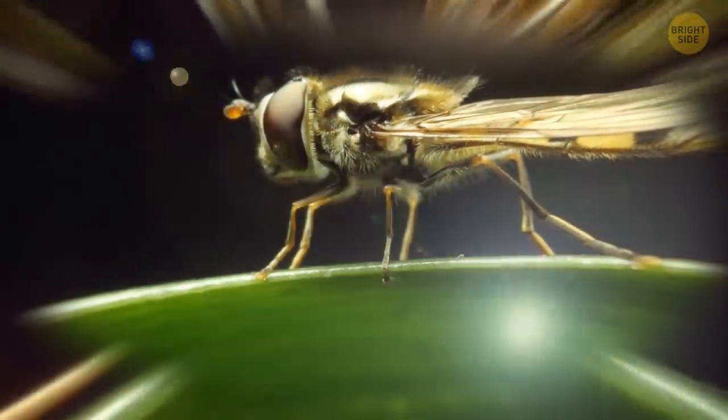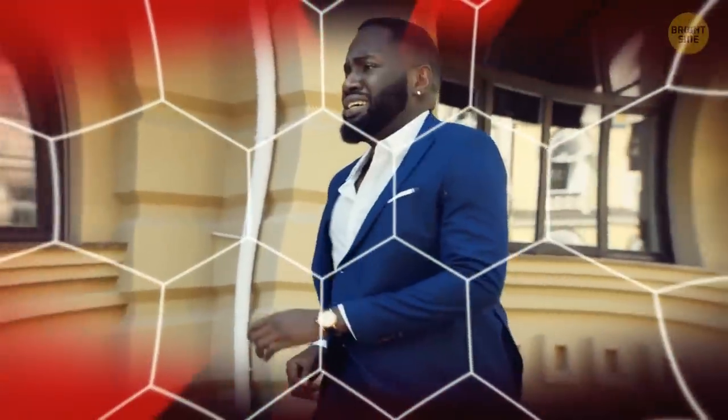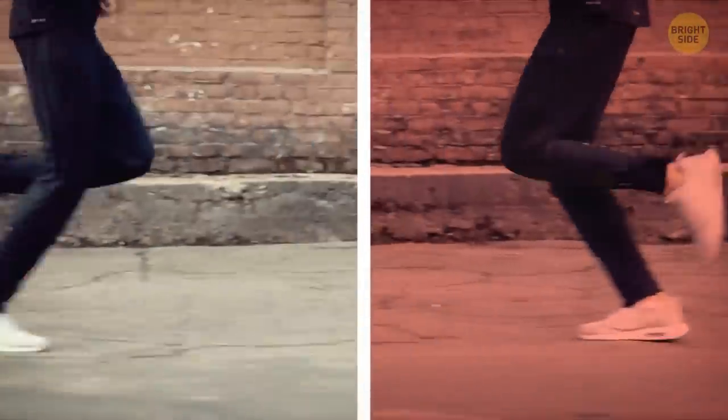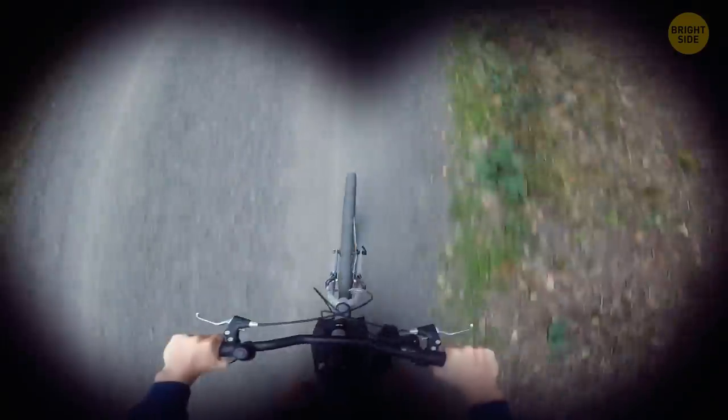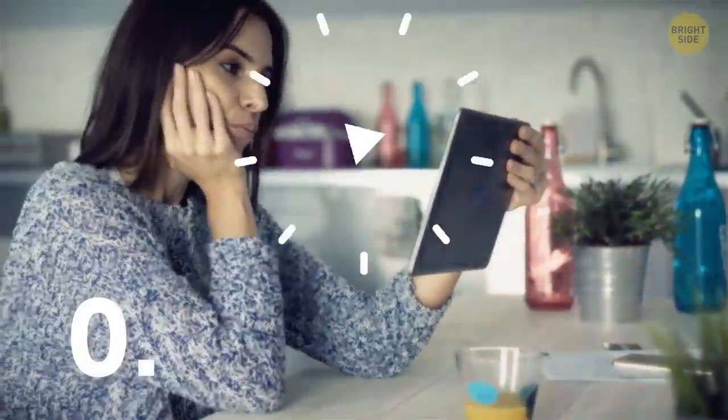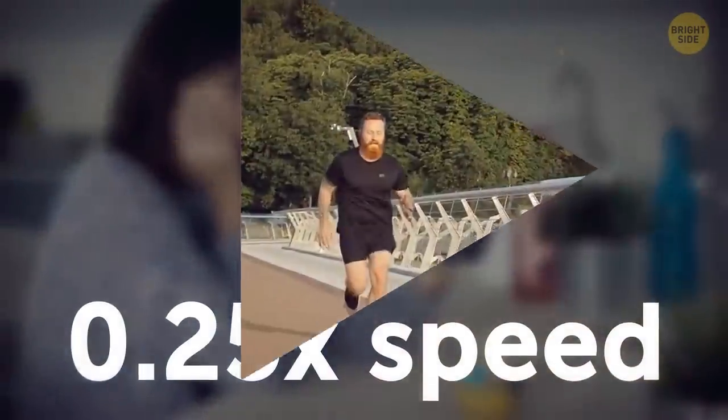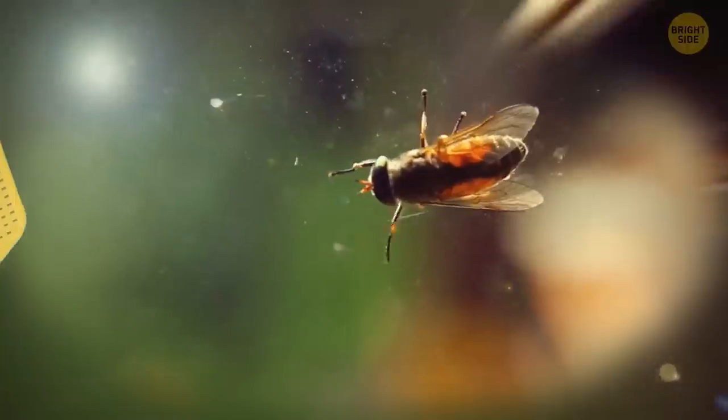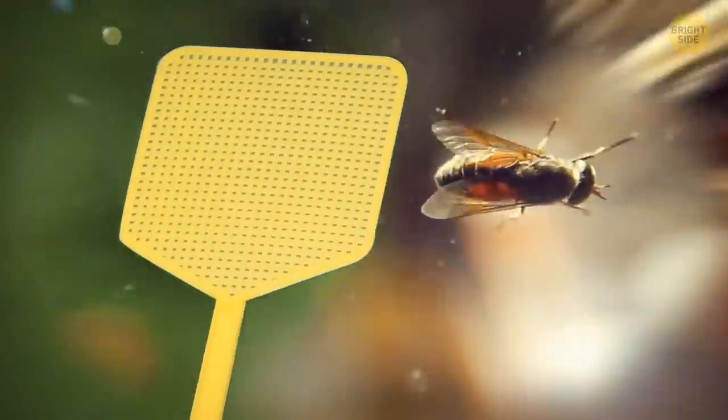Wonder why it's so hard to swat a fly? Well, to a fly, we're sloths. That's because they see things in slow motion compared to us. Species have a different perception of speed. The speed we see will be twice as fast for a turtle, and it will be four times slower for a fly. Turn a video to 0.25 speed and imagine someone approaching you at this pace. Well, that's how a fly sees you. So yeah, it has enough time to escape.